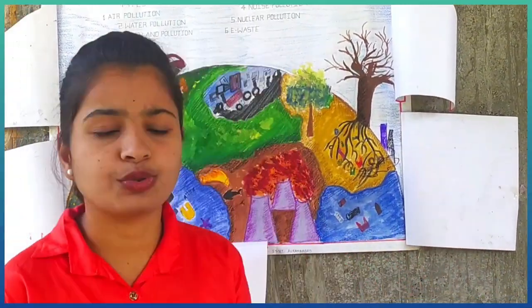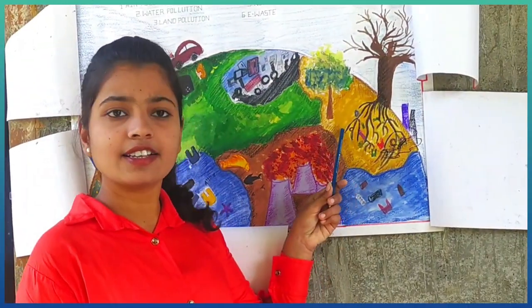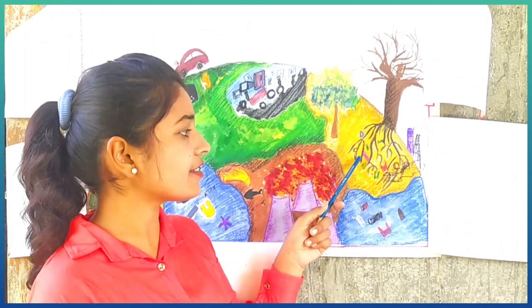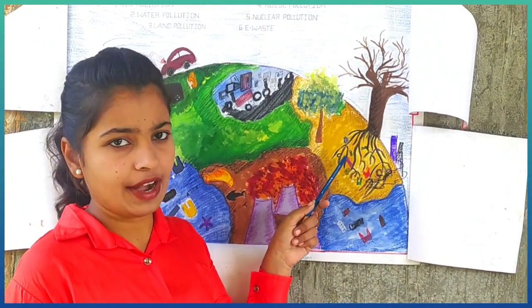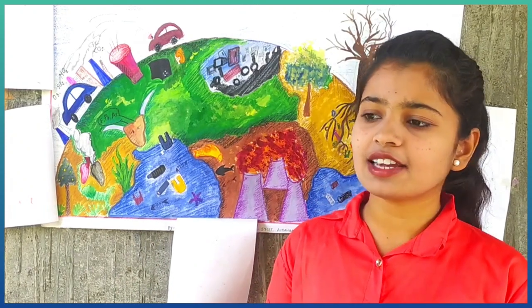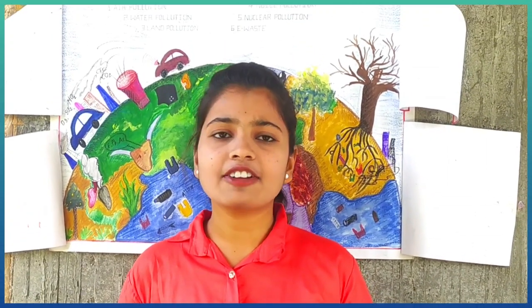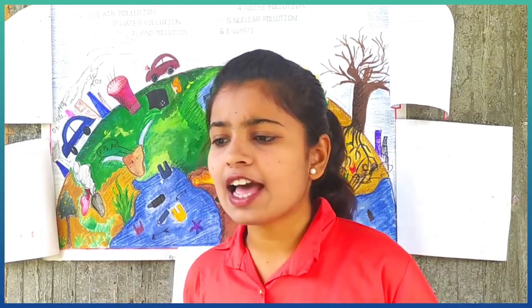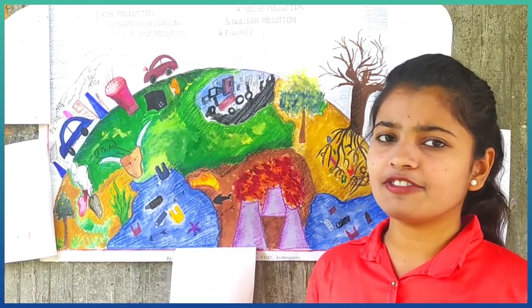Now, the third type is land pollution. Insecticides, industrial waste, nitrification, etc. lead to the pollution of land. The fourth type of pollution is noise pollution. Industrial, transportation, domestic, cultural, agricultural, defense, and mining activities have adverse effects. It has effects such as physical effects, psychological effects, and physiological effects.